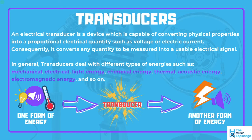The microphone is a form of transducer: an electrical device capable of converting physical properties into an electrical quantity such as a voltage or an electric current. Consequently, it converts any quantity to be measured into a usable electrical signal. There are many different types of transducers, each turning one form of energy into another — whether that's light energy, chemical energy, thermal energy, acoustic energy (which is what we're dealing with here), electromagnetic energy, and so on.